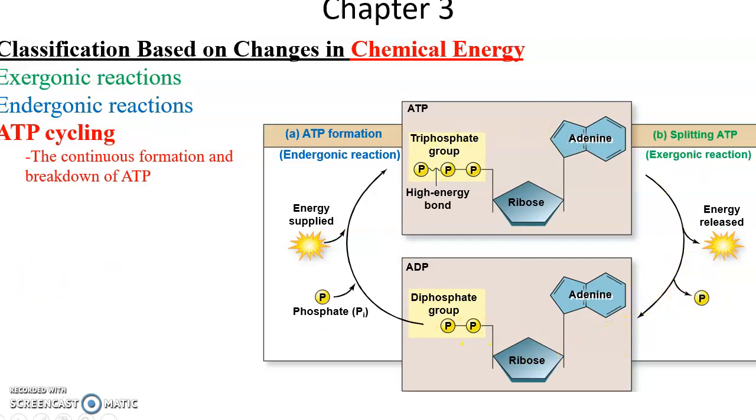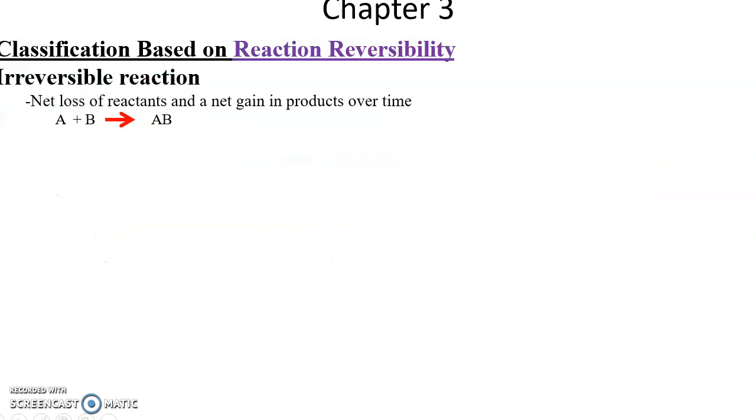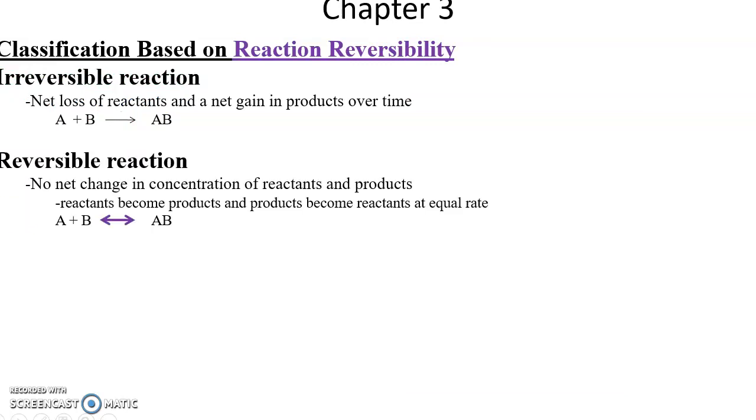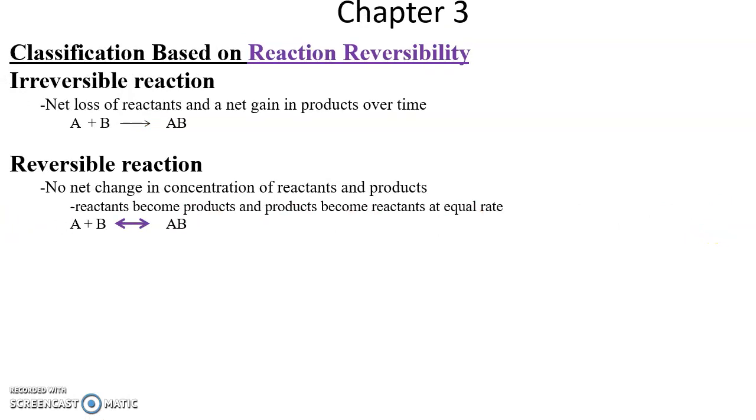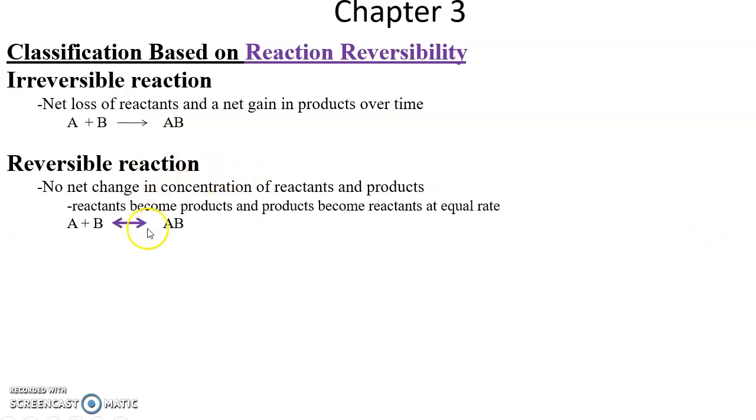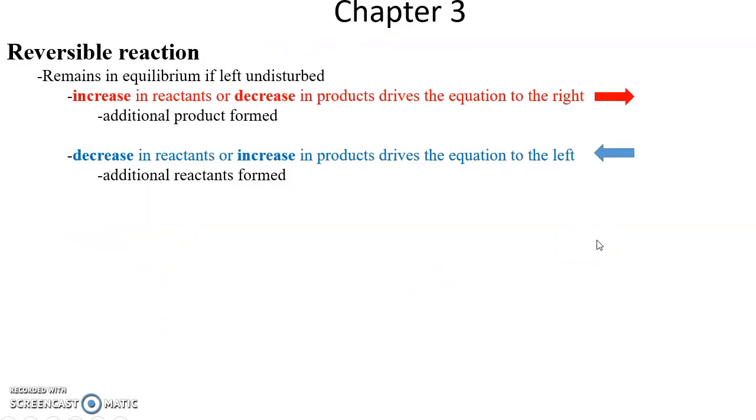Irreversible chemical reactions cannot go backwards—substrates lead to products, that is it. Reversible reactions: you can bounce backwards and forwards between the reactants and the products. Normally they find a balance in the amounts of reactants and the amounts of products. You can then disrupt that balance, disrupt that equilibrium by disturbing it.